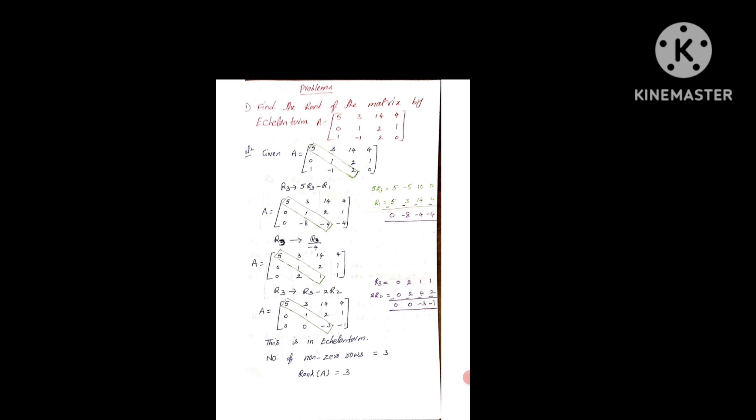So next we get the matrix A as [5, 3, 14, 4 / 0, 1, 2, 1 / 0, minus 8, minus 4, 4]. Here the two elements are zeros — the operation is completed. Next, we divide the third row by minus 4: R3 divided by minus 4. We get the next matrix with row 3 becoming [0, 2, 2, 1, 1].